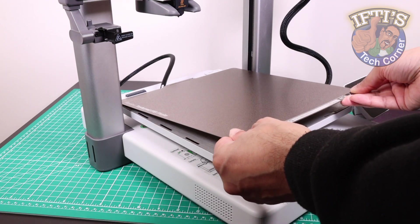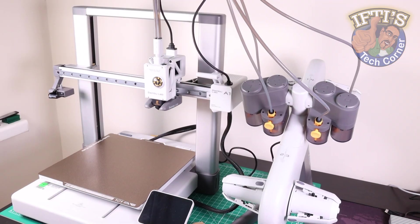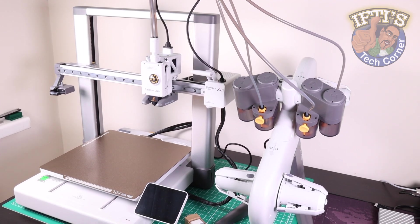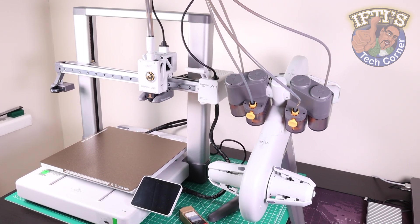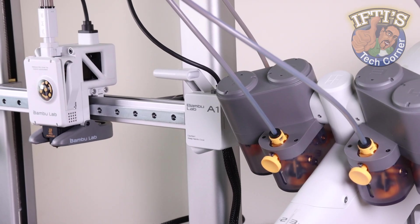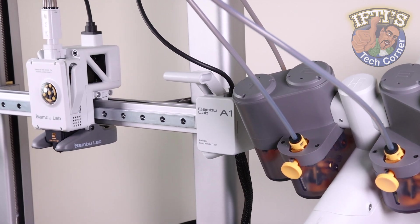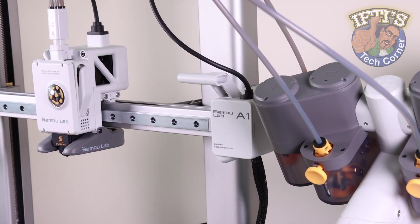With our Bamboo Lab A1 printer set up and complete with the multi-colour AMS light unit, the next step involves power up and calibration. And fortunately, just like we've seen throughout the hardware setup, it's a simple, straightforward affair.